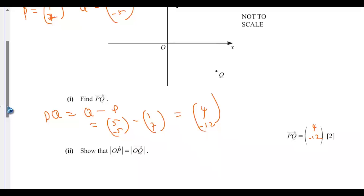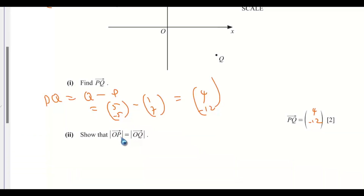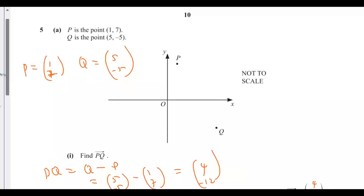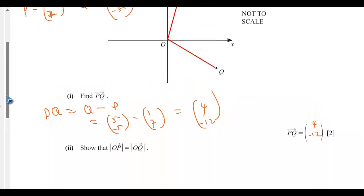Part 2 shows that the modulus — the magnitude — of vector OP equals the magnitude of vector OQ. So that is this vector OP and OQ. They have equal magnitude, that is their values are equal.